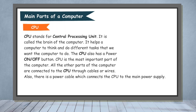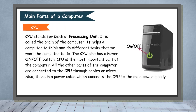CPU. CPU stands for Central Processing Unit. It is called the brain of the computer. It helps a computer to think and do different tasks that we want the computer to do. The CPU also has a power on and off button. CPU is the most important part of the computer. All the other parts of the computer are connected to the CPU through cables or wires.